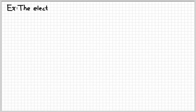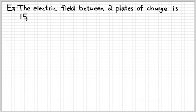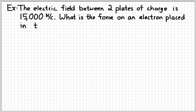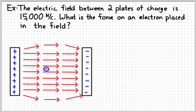Let's look at a simple example. Suppose we wanted to find the force on an electron placed between two plates of charge, as we saw in the previous video. If the electric field between the two plates is 15,000 newtons per coulomb, what's the force on the electron? The electric force is simply field times charge.